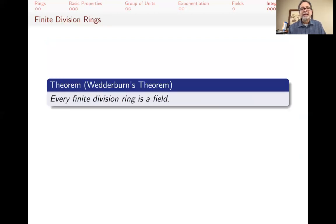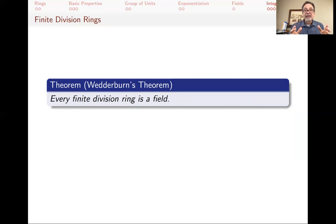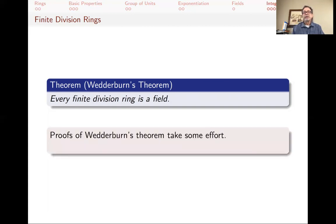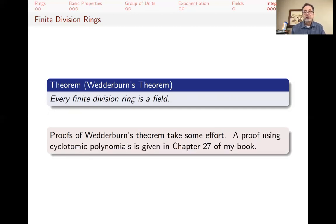There's another theorem, Wedderburn's theorem, stating that every finite division ring is also a field. This is more surprising because a division ring need not have commutative multiplication, yet the theorem says finiteness forces commutativity. This is not a trivial theorem — unlike the previous result. The proof using cyclotomic polynomials appears much later in the Galois theory chapters.